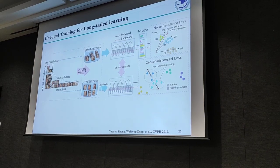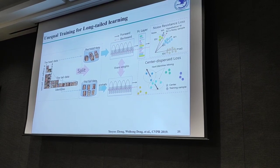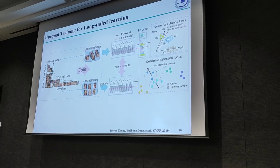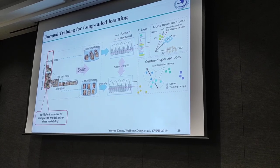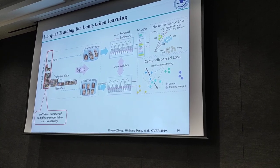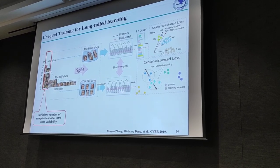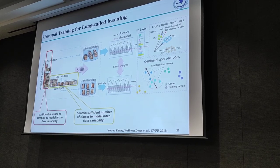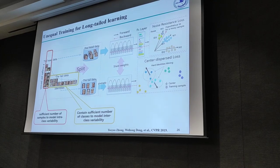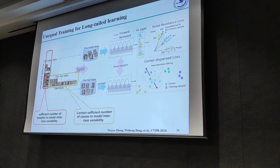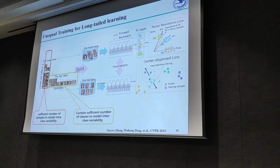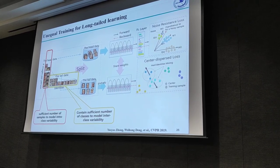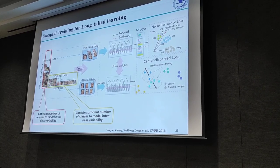Large datasets naturally follow a long-tail distribution. We divide the long-tail data into two parts: the head part, which contains enough samples to learn intra-class variations, and the tail part, which contains a sufficient number of classes to model inter-class variability. By taking advantage of both parts, the network learns more stable features from long-tail training data.